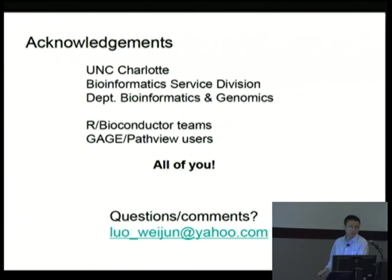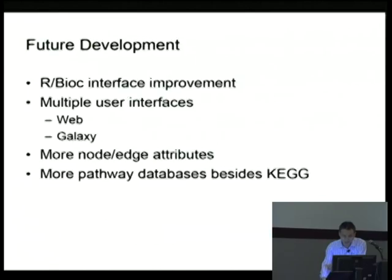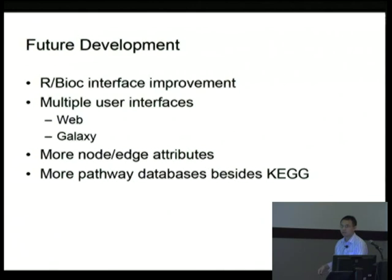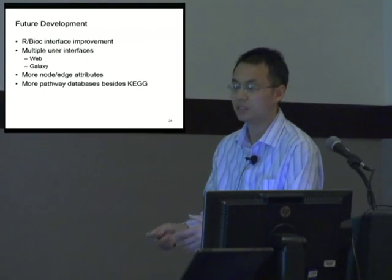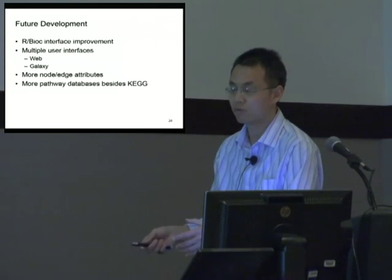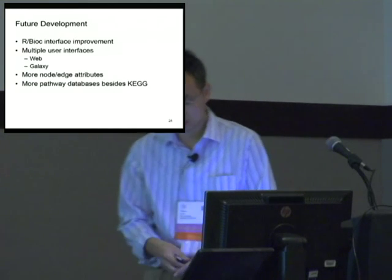Let me give you a recap of PATH-View. PATH-View is an R BioConductor package published last year, and it provides three important functionalities. First, it can visualize user data on pathway diagrams. Second, it provides strong data integration capability — you can work with a large variety of different data types, formats, molecular IDs, and species. Third, it enables integrated pathway analysis workflows for multiple types of omics data. Finally, it has generated global impact and is widely used in academia and industry.